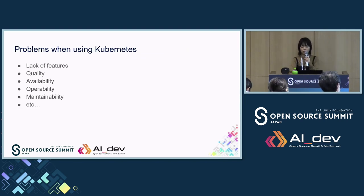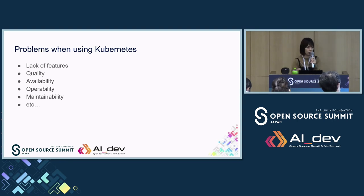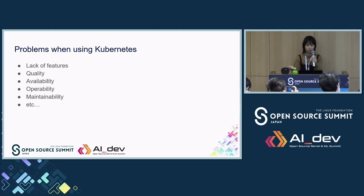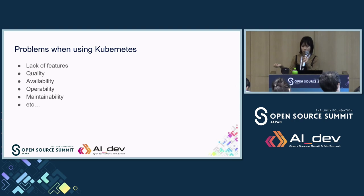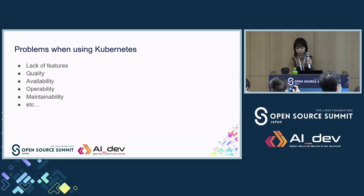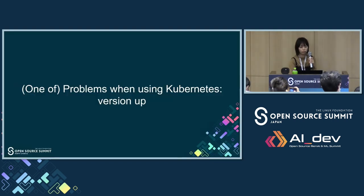Nowadays Kubernetes is popular and used in many industries. But Kubernetes still has many problems — for example, lack of features, quality, availability, maintainability, and so on. In today's session, I will focus on the problem about version upgrade.